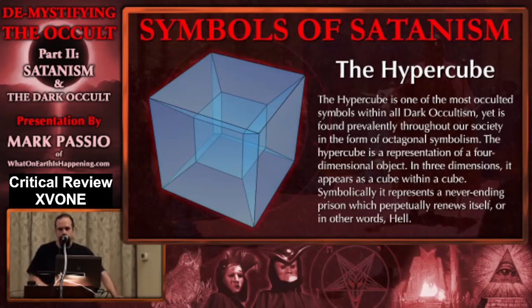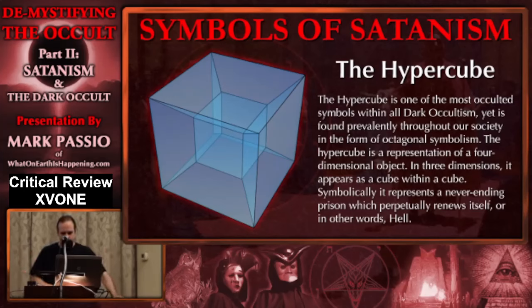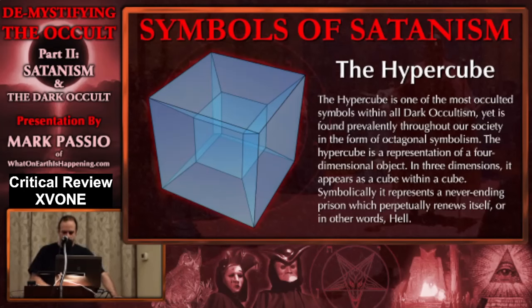You'll see that all over in control-based institutions. In three dimensions, it appears as a cube within a cube — a three-dimensional depiction of the four-dimensional hypercube. You're rotating a cube around all of its planes and surfaces. Very difficult to conceptualize in the human imagination, because we live in a 3D world, not a 4D one. Symbolically, the hypercube represents a never-ending prison which perpetually renews itself — in other words, hell.